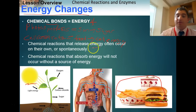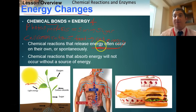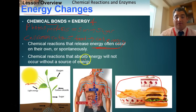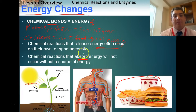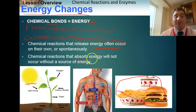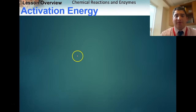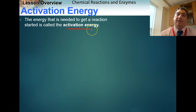Chemical reactions that release energy usually occur on their own. If you light a piece of wood or a stack of homework on fire, those papers are going to catch fire and go out of control — that energy goes on its own. But some chemical reactions have to absorb energy and won't occur unless we give them that energy, like photosynthesis requiring sunlight.